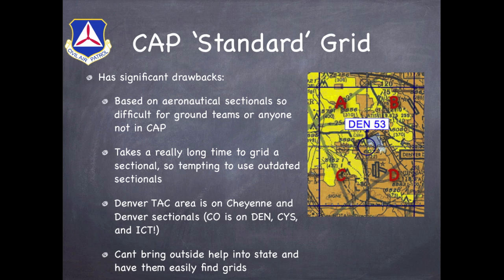There are some significant drawbacks to the CAPS standard grid system. First off, it's based on aeronautical sectionals, so if you don't have a sectional, or if you're a ground team or somebody who's not in CAPS, the system becomes quite cumbersome. It actually takes a really long time to grid these sectionals, so you'll often see aircrew — pilots, observers, scanners — using old sectionals, months or even years old, that might not have some fairly significant safety issues labeled on them, such as new towers, windmills, and other things that could impede our low-level searches when we're flying low and slow.